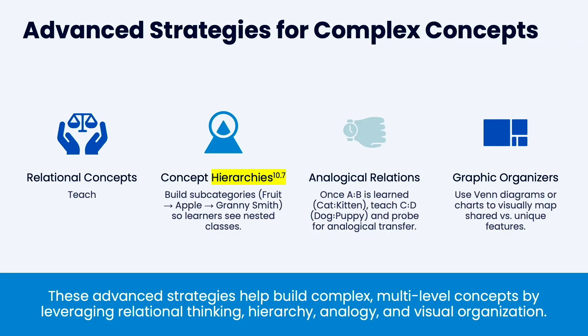Relational concepts are really hard to teach because they're based on relations, but they will come up. For concept hierarchy, build subcategories — fruit, then apples under fruit, then multiple apple varieties. Make sure learners see the nested classes. For analog relations, ensure you're getting those emergent relationships. Graphic organizers are really helpful for bigger concepts — use diagrams and charts to visualize things visually.